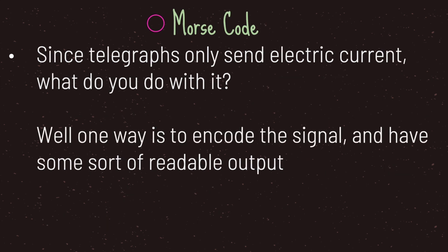Telegraphs only send electric current, so what exactly do you do with it? Lucky for us, Samuel Morse along with helping invent the telegraph machine also came up with Morse code. Morse code was a way you could encode messages. You would press a transmission key — pressing briefly sends a dot, pressing longer sends a dash. On the other end, a device receives the message and transcribes the dots and dashes on paper.